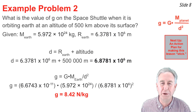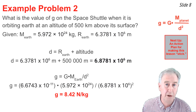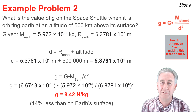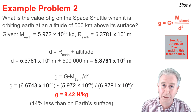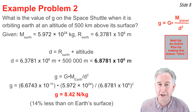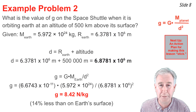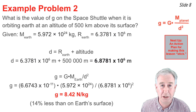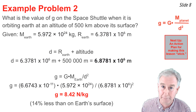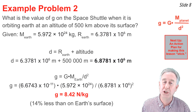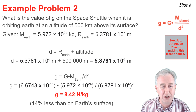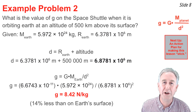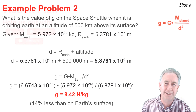A couple of things to note about this result: first, it's smaller than on Earth's surface — about 14% smaller. But second, it is not zero. So if we were to call the space shuttle a zero-g environment, what we don't mean is that the g value is literally zero at that location. We'll discuss this further in a later video in this series when we talk about the idea of perceived weightlessness.